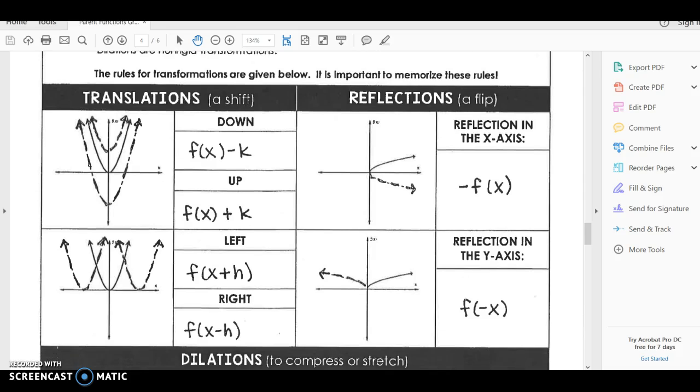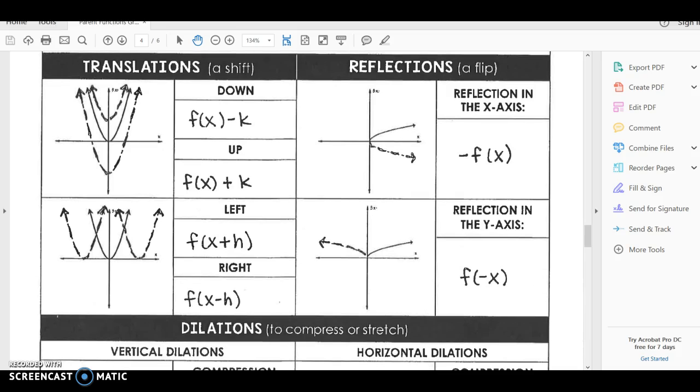All right guys, so the translations going up and down are going to have a negative number if it's going to shift you down, and a positive number if it shifts you up. So negative k shifts you down, positive k shifts you up. That's exactly how you would expect it.